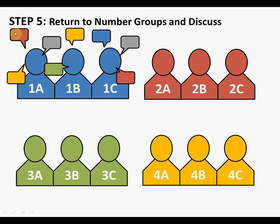For example, one student might say they learned a lot from group 2's material, while another was confused by it but has a question their group never answered. A third chimes in that group 3 answered that question well in their letter group, and someone else clarifies what group 4's segment was really about and why it was important. This is how the big picture comes together, with different perspectives from different letter-group discussions.